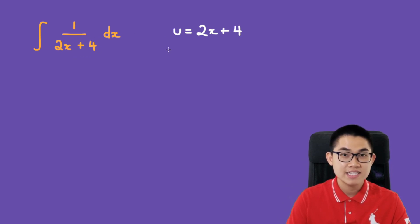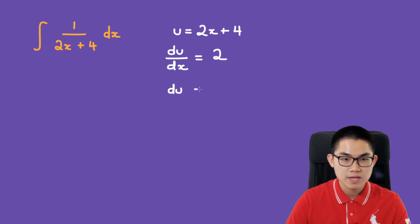Now the second step is to differentiate this with respect to x. du over dx - the derivative of 2x plus 4 is 2. So du equals 2 times dx, and dx equals 1 over 2 du.